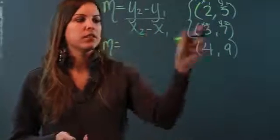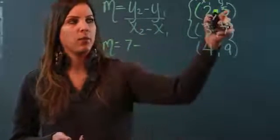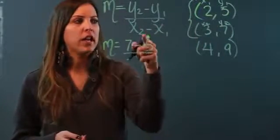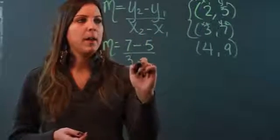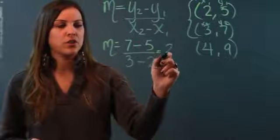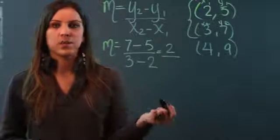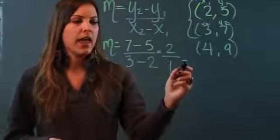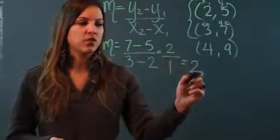Now I'm just going to take these values and substitute them into my formula. So m equals y₂, 7, minus y₁, 5, over x₂, 3, minus x₁, 2. And now I simplify. 7 minus 5 in the numerator is 2 over 3 minus 2 in the denominator is 1.